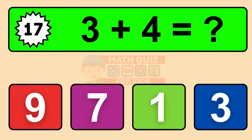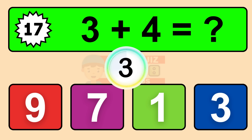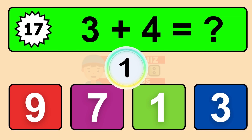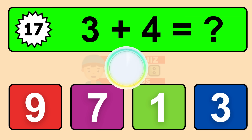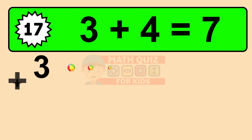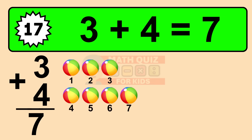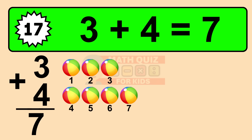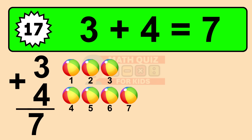Question seventeen: three plus four equals what? The answer is three plus four is seven. Let's count it. One, two, three, four, five, six, seven.